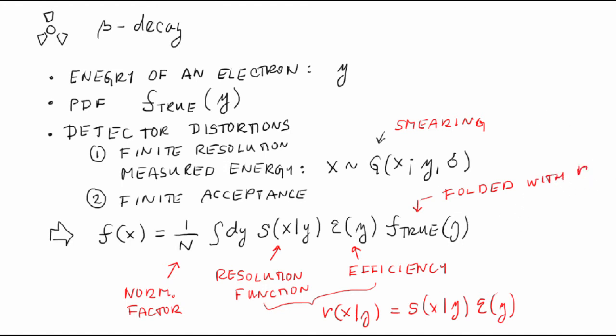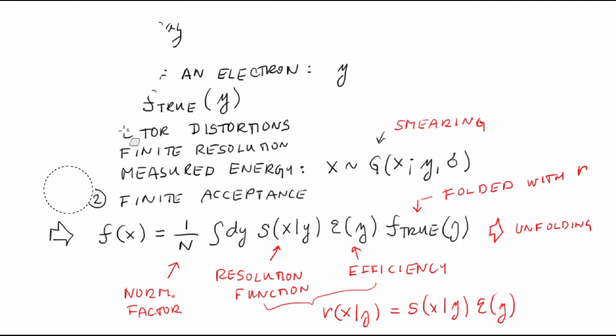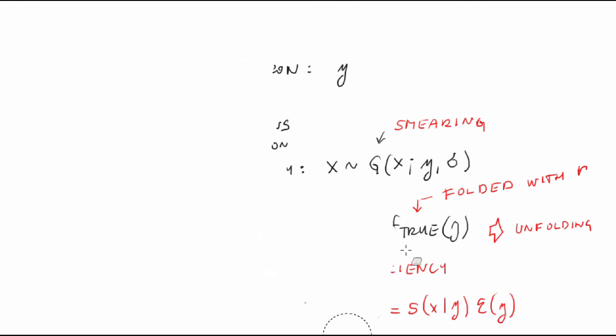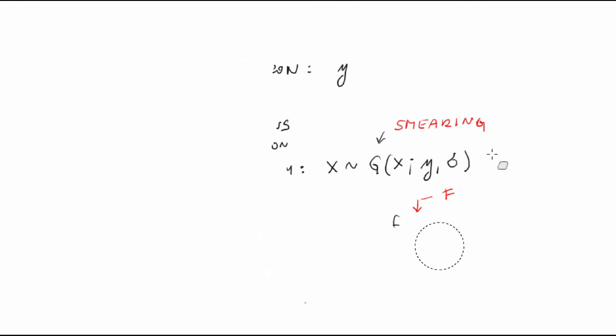Voilà — the function we are after is folded. Naturally, the inverse operation that we need to perform is called unfolding. There are other names describing the same problem, such as deconvolution or unsmearing. They are used as synonyms to unfolding, but in fact these names don't reflect the need to correct for the finite efficiency as well. Therefore, let's stick to the name unfolding — it is the most common one anyway.